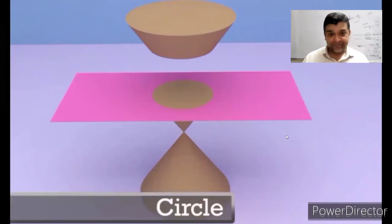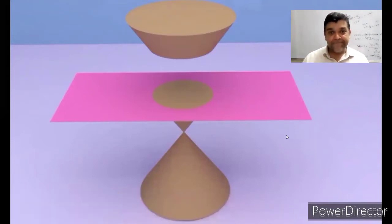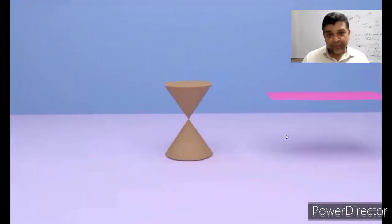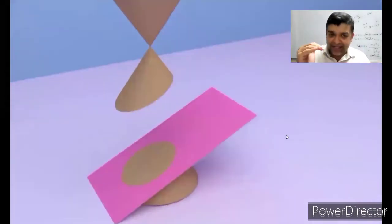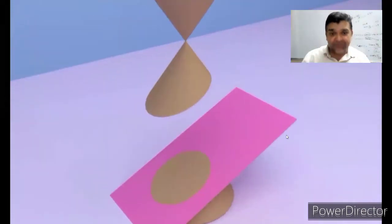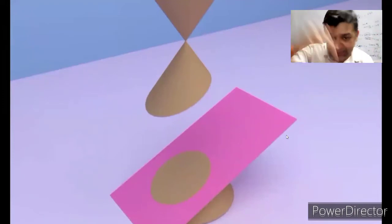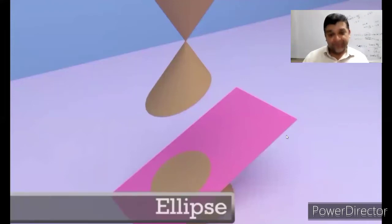Now if I slightly tilt my cutting plane and observe from the top, I get a distorted circle, which is an ellipse. Can you observe the ellipse from the top? There you go, right?